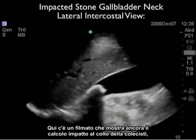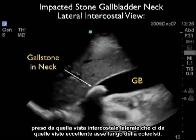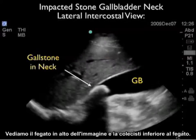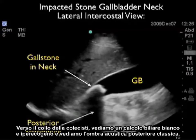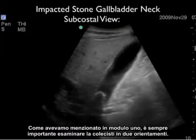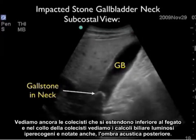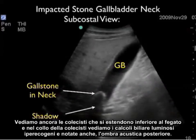Here's a video clip showing an impacted stone at the gallbladder neck, taken from the lateral intercostal view giving great long axis views. We see the liver at the top and the gallbladder inferior to it, with a white hyperechoic gallstone at the neck and classic posterior acoustic shadowing. We then move the patient into the left lateral decubitus position scanning from the subcostal plane, again seeing the gallbladder inferior to the liver with the hyperechoic gallstone at the neck and posterior acoustic shadow.